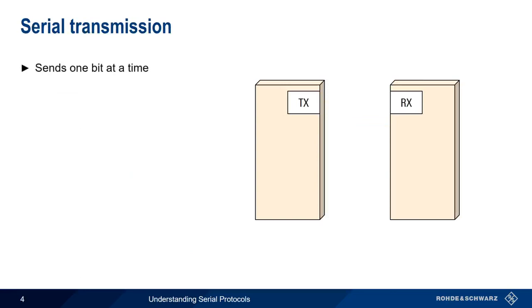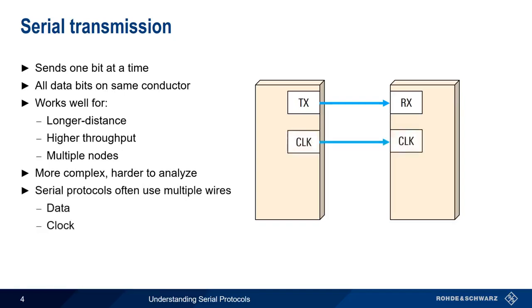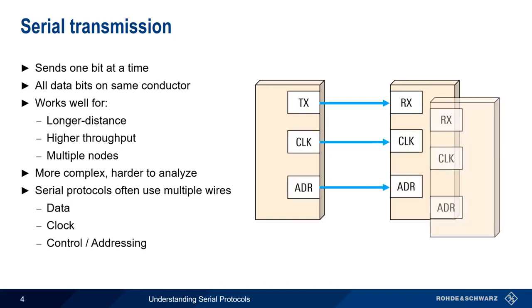As the name implies, serial transmission sends one bit at a time, with all the bits being sent over the same conductor. Serial transmission works well for longer distance applications, higher throughput, and applications with multiple nodes, like a single master node and multiple slave nodes. However, this comes at a cost, with serial transmission being more complex and harder to analyze. While data bits are sent over a single conductor, most serial protocols use multiple conductors, adding a clock signal and some type of control or addressing for multiple nodes.